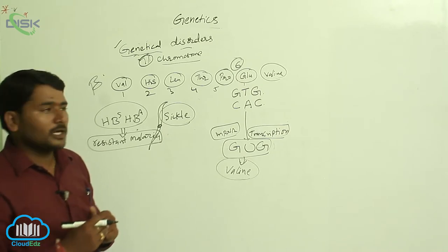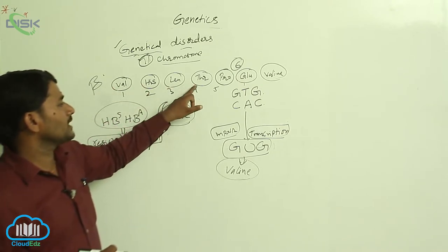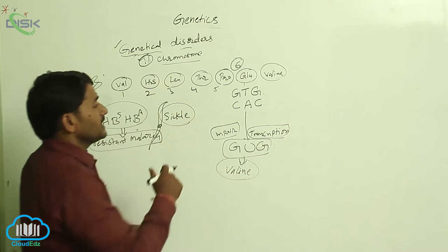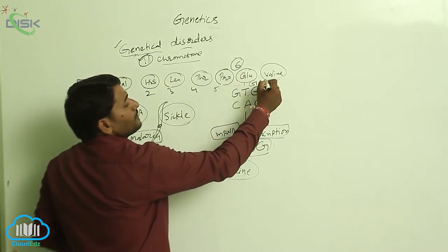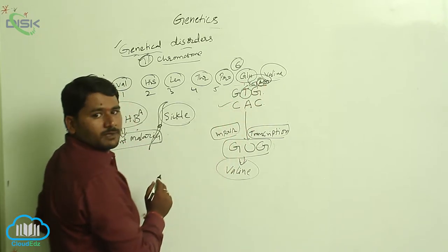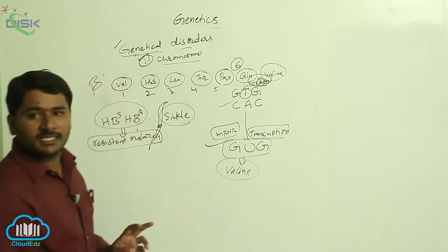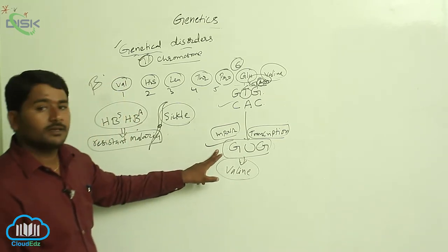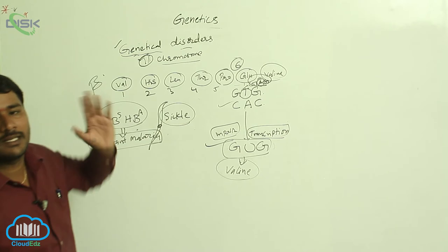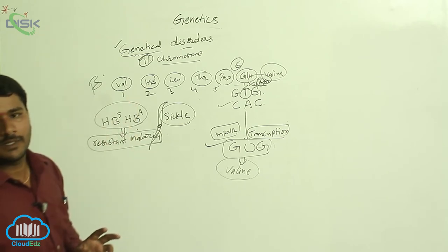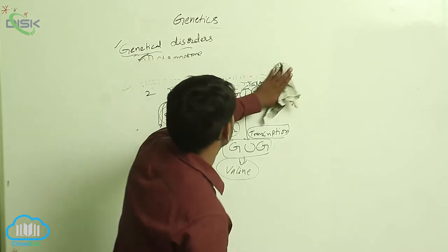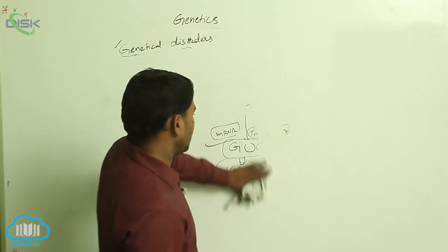Taking the beta polypeptide chain: valine, histidine, leucine, threonine, proline, glutamic acid, and valine. When point mutations take place, the GAG codon has A replaced by T. Then the complementary sequence is changed, and the codon on mRNA is also changed — indicating valine instead of glutamic acid. That is why valine replaces glutamic acid — this is called sickle cell anemia.